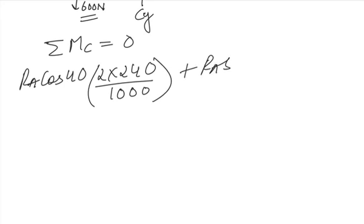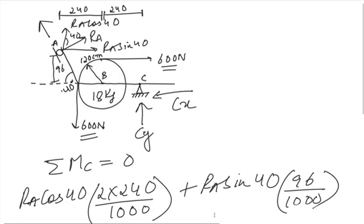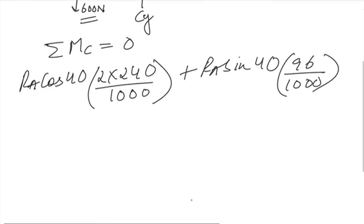Plus RA sin 40. Again clockwise. We will take it positive here this time. 96 perpendicular distance. As given in the figure. 96. Plus.